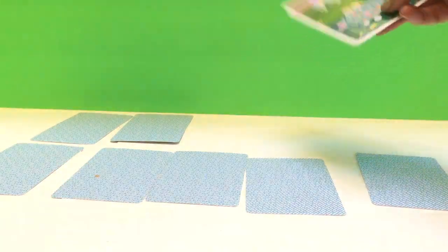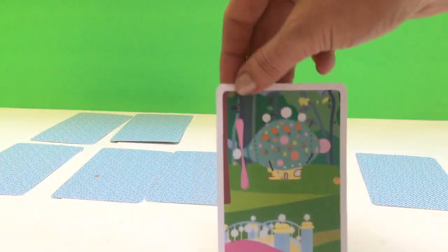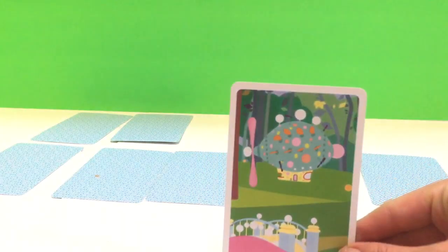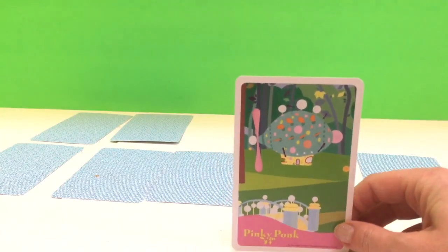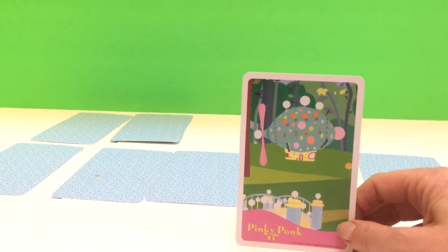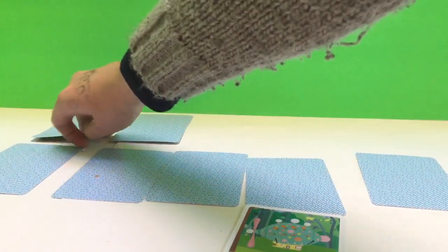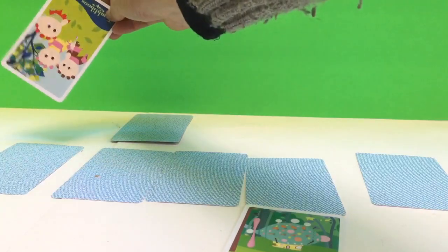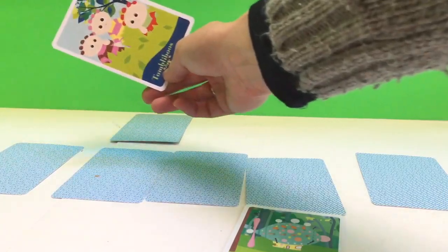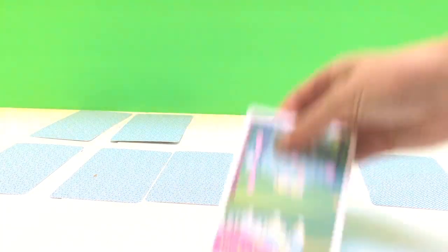Let's see, my turn again. It's the Pinky Ponk. Where was the Pinky Ponk? Maybe there. Oh, no match. It was the Tombliboos. It must have been the other card.